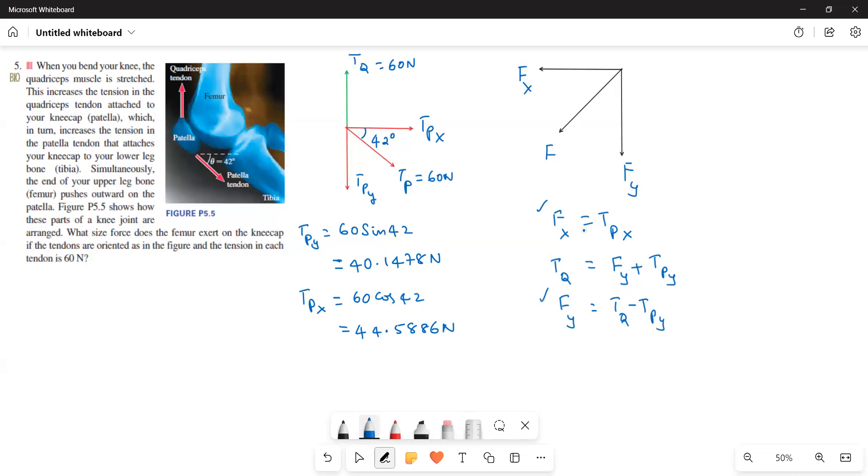And then TQ is equal to 60. So Fx is equal to, I will write here, Fx is equal to 44.5886 N. And then Fy is equal to 60 minus, TQ is equal to 60, I will write here TQ is equal to 60 N. 60 minus TPy 40.1478 N. Therefore Fy is equal to 19.8521 N.